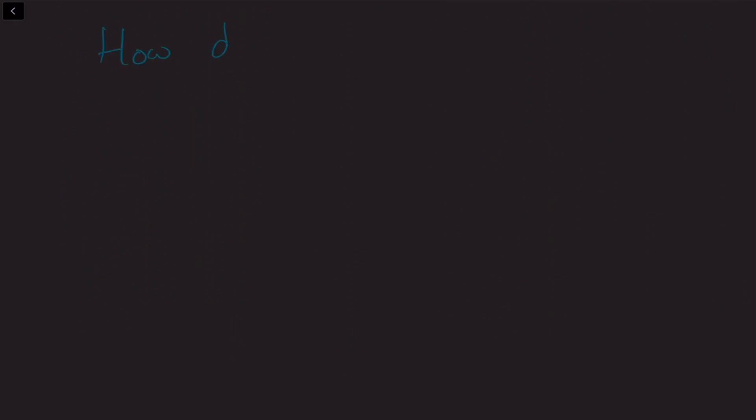Now that we've addressed the question of setting up a coordinate system and of dynamics given a particular coordinate system, we come to another interesting question: how do different observers correlate their observations of dynamics? So how do different observers compare their observations?